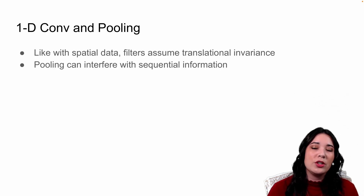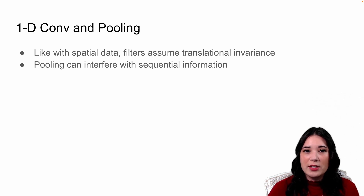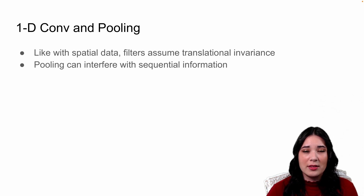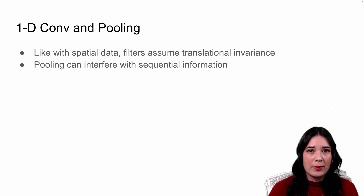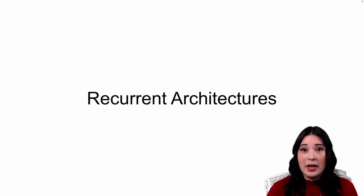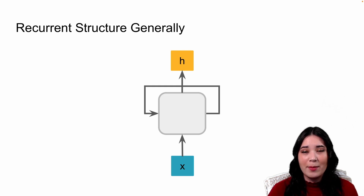While it makes sense that we can use this architecture to process sequential data, 1D convolutional and pooling layers are typically not our go-to for modeling this type of data. Like when processing images, the filters in these 1D convolutional layers assume translational invariance — and while that's true for images, it's not always true for sequences. Also, pooling can interfere with the sequential information in our data. So while this is an improvement over feedforward networks, we can do better — and the way we can do better is with recurrent architectures.